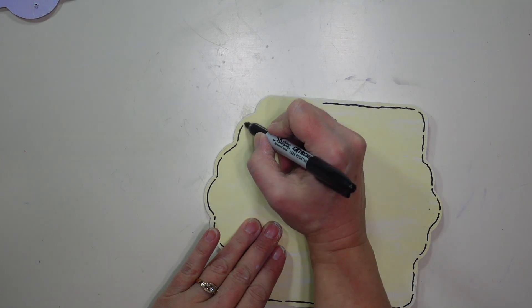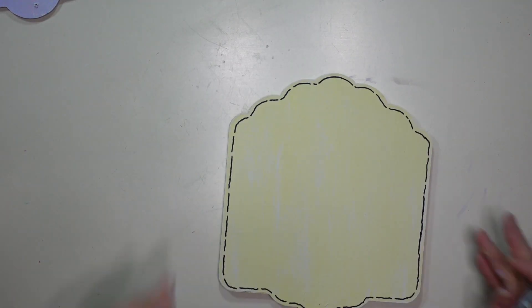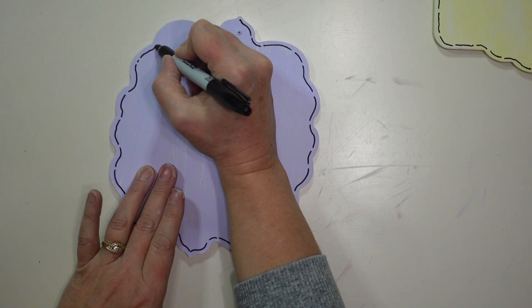To add a little bit of a border, I'm just using a sharpie marker and going around with a little bit of a broken line around each of my signs.